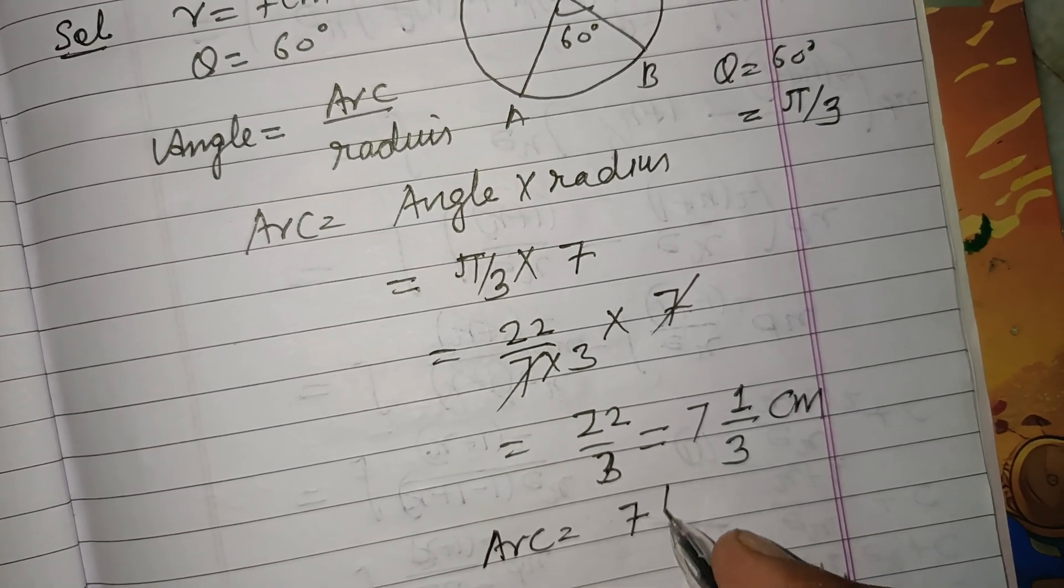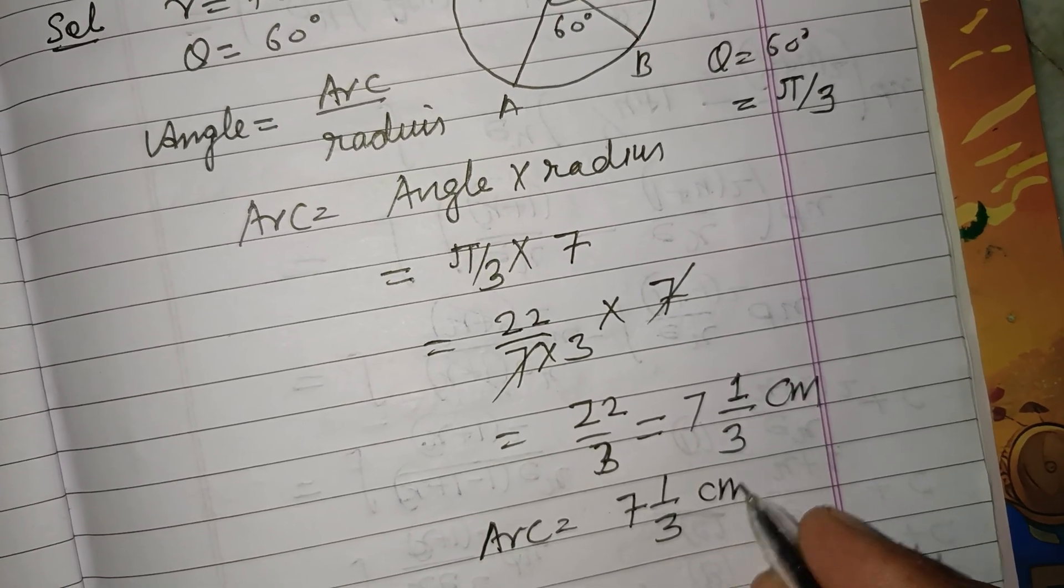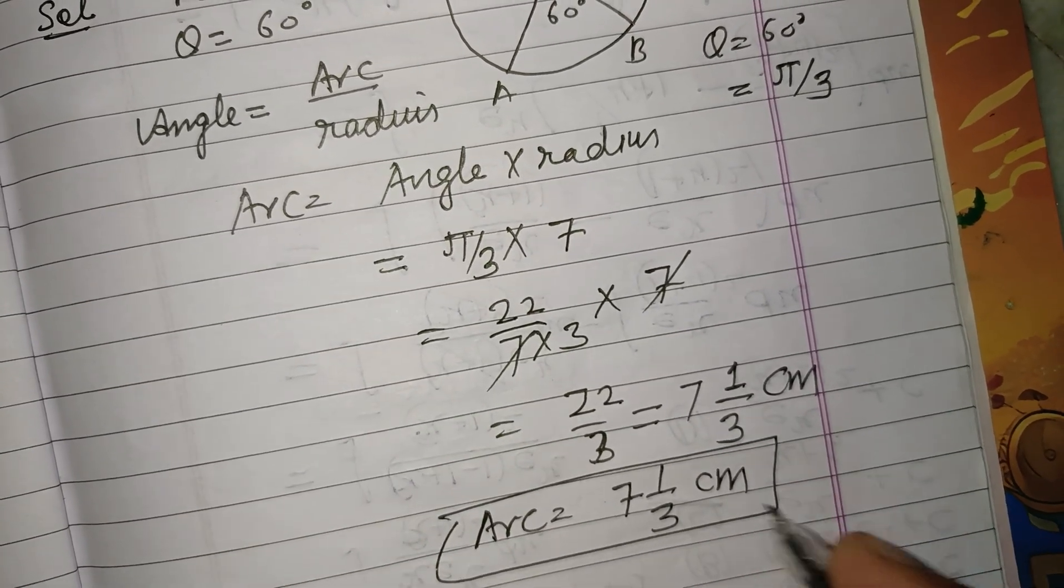So arc length is 7 and 1/3 cm, and this is our answer.